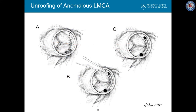These pictures demonstrate the unroofing procedure for an anomalous left coronary off the right sinus. The intramural segment is shown here with stippled lines. The unroofed segment is cut with a knife and often some of the edge tissue is excised. Tacking sutures are often placed around this to prevent dissection of the aortic wall.